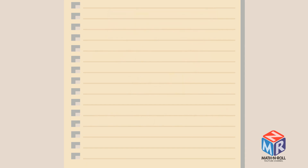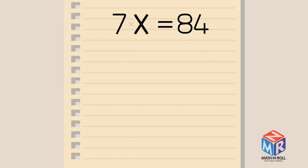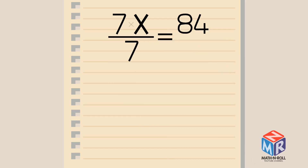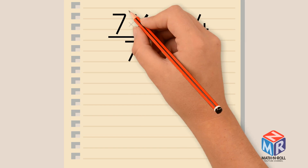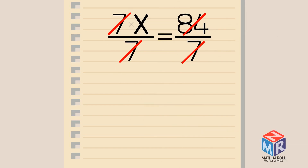Let's try another example. 7x equals 84. Right now, our x is not by itself because it is being multiplied by 7. To undo this operation, we divide both sides by 7. We write this division in fraction form. Now that both sides are being divided by 7, we can cancel out. We are left with x equals 12.